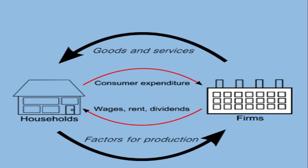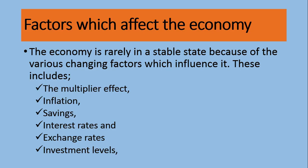This flow is called the circular flow of national income. This is a two-sector economy with just households and firms. When we add government and external trade, we get a three-sector and four-sector economy with additional variables.